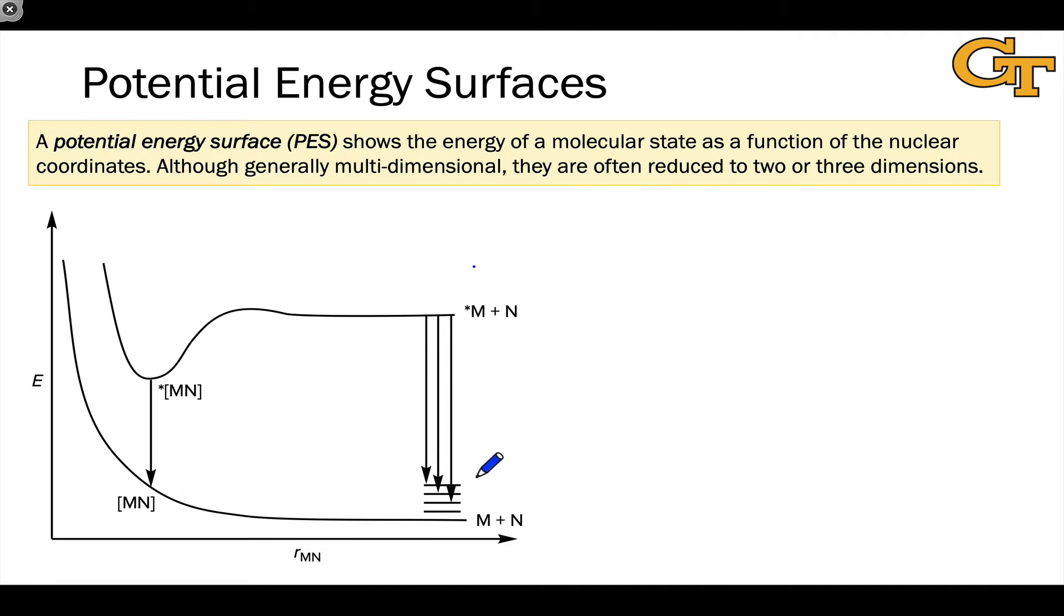And the x-axis, in this case, is labeled RMN and is the distance between M and N. Out on the right, where RMN is very large, we have a large separation between M and N. So we can represent that with a large gap between M and N.